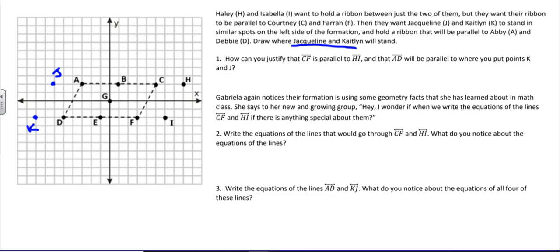So CF, if I want to write an equation that passes through those points, I don't see a y-intercept there easily to get, so I'm going to use point slope form. So I have y equals m and then parentheses x minus x sub 1 plus y sub 1. I'm using our point slope form.